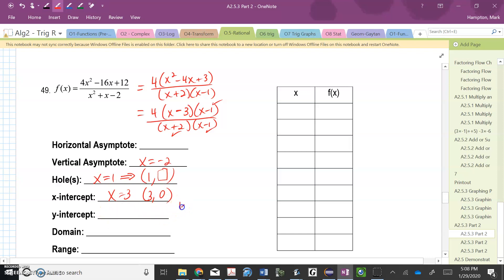The Y intercept, remember, is when we let X equal 0. So I'm plugging a 0 in for X. So I have a 4 and then 0 minus 3 and a 0 minus 1 and a 0 plus 2 on the bottom and a 0 minus 1 on the bottom. So that's going to give me a 4 and a negative 3 and a negative 1 and a 2 and a negative 1. These negative ones cancel. And I'm going to be left with a negative 6. So my Y intercept is 0, negative 6.